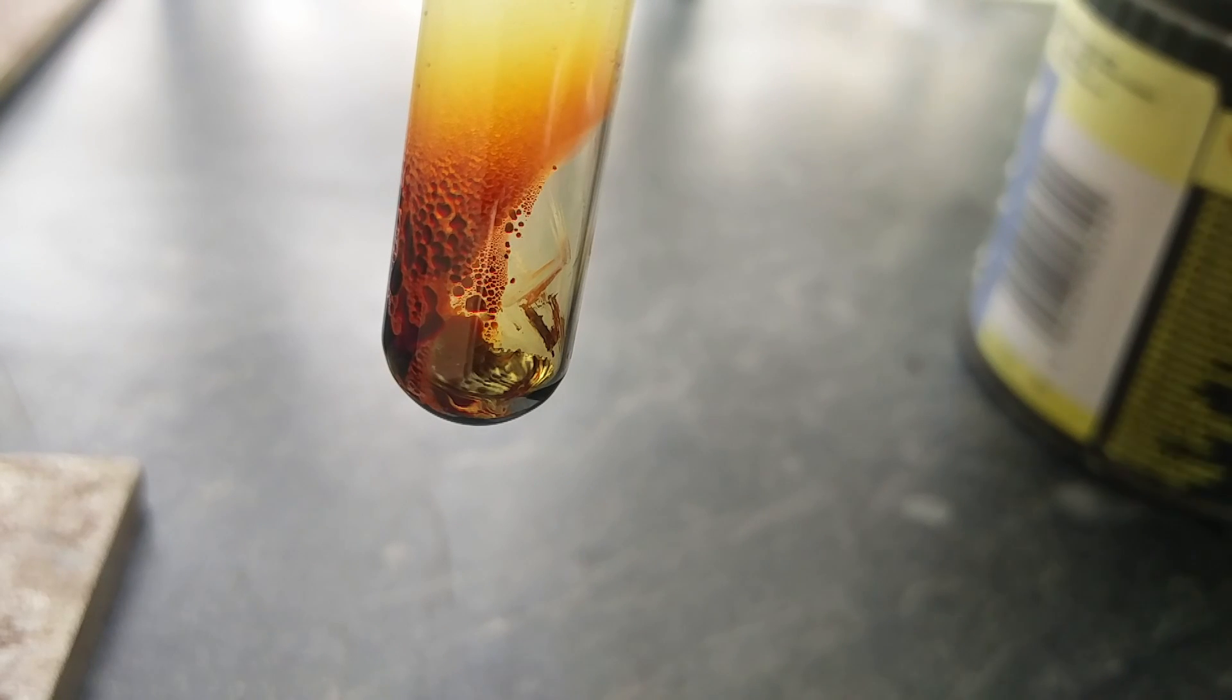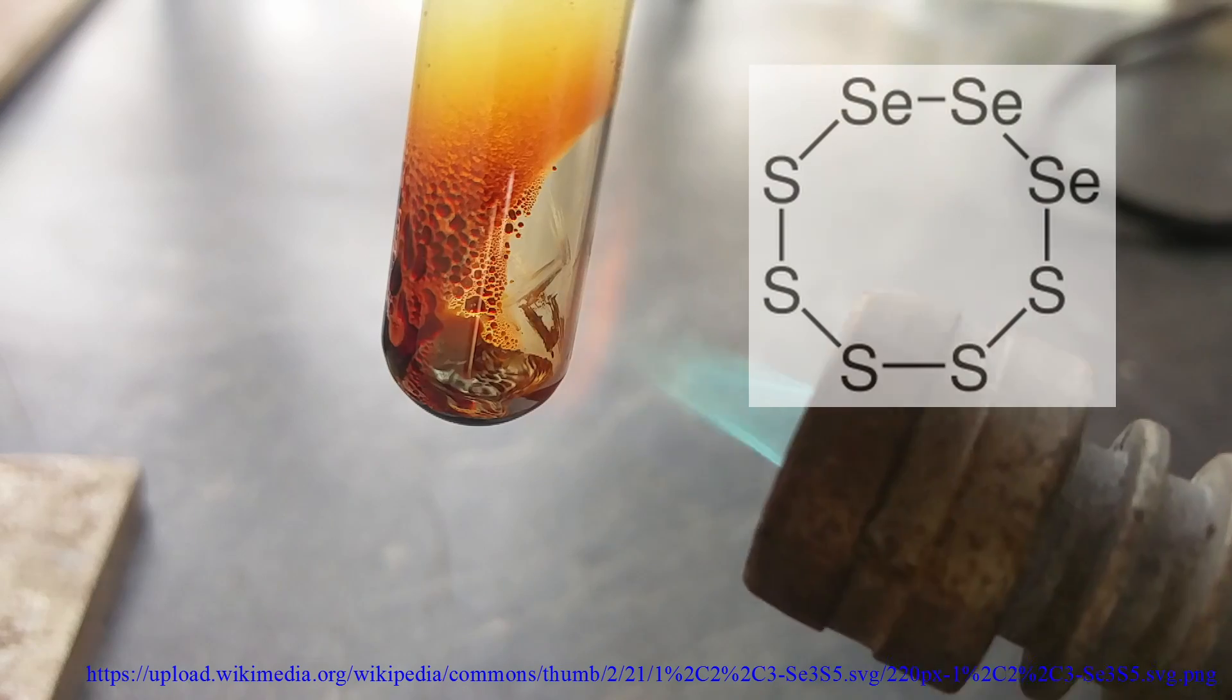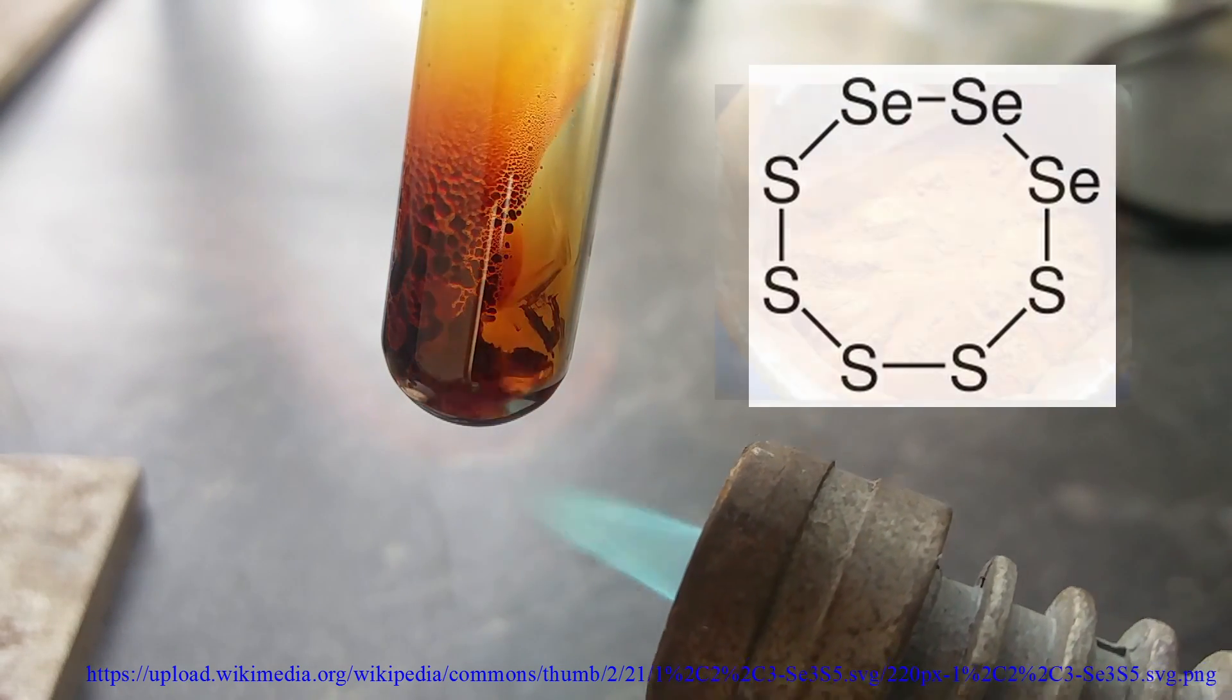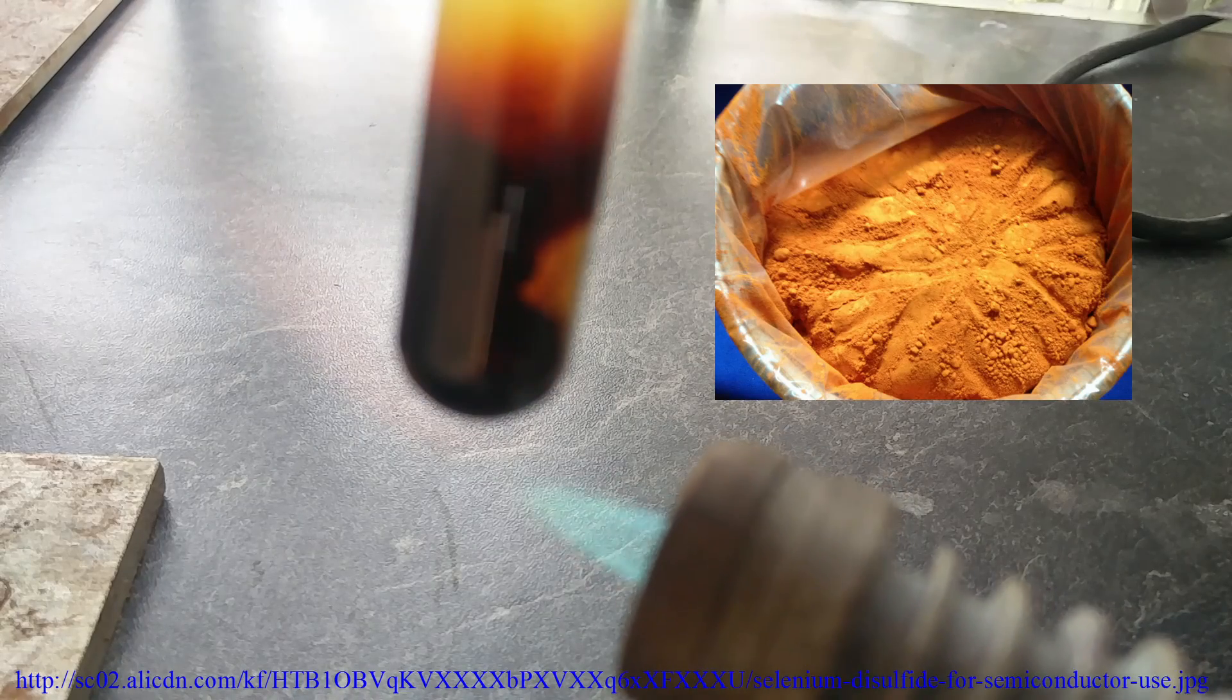One last thing I want to show you is the reaction of selenium and sulfur. They form a powder which consists of selenium sulfur rings. This compound is, for example, used against hair dandruff. Unfortunately, you can't really see the selenium sulfide, since it is mixed with this sulfur stuff.